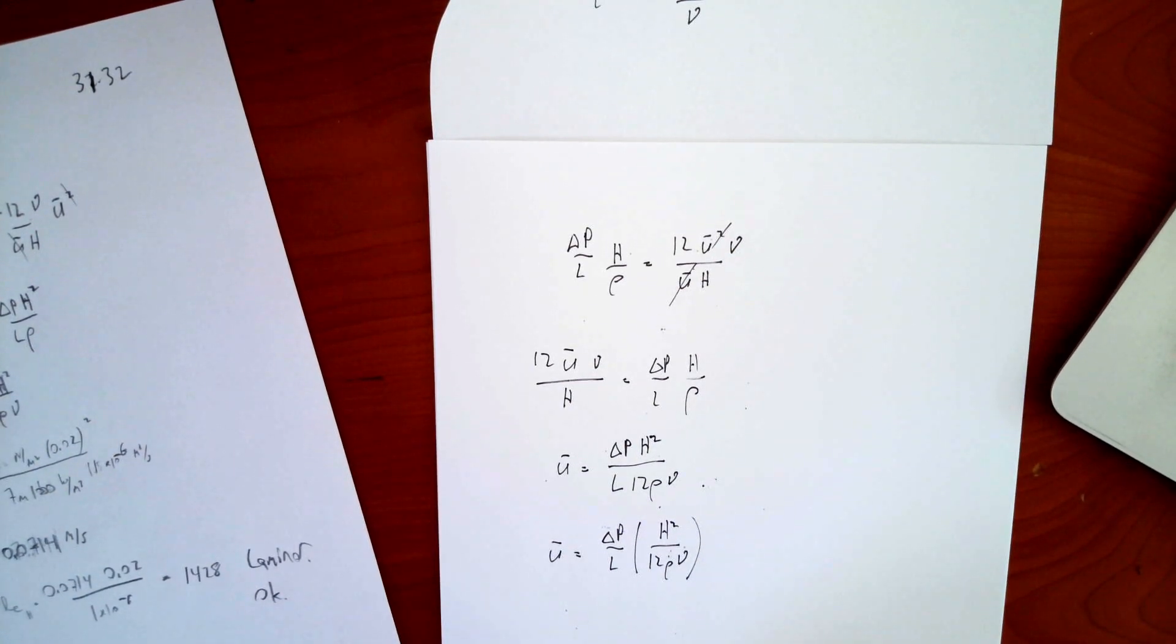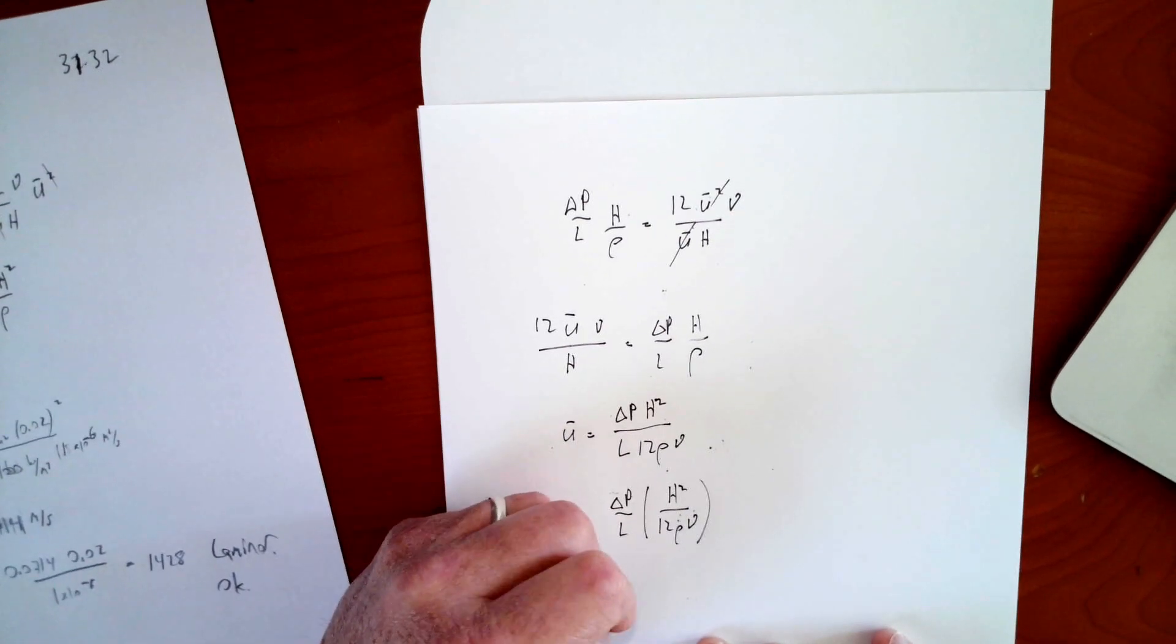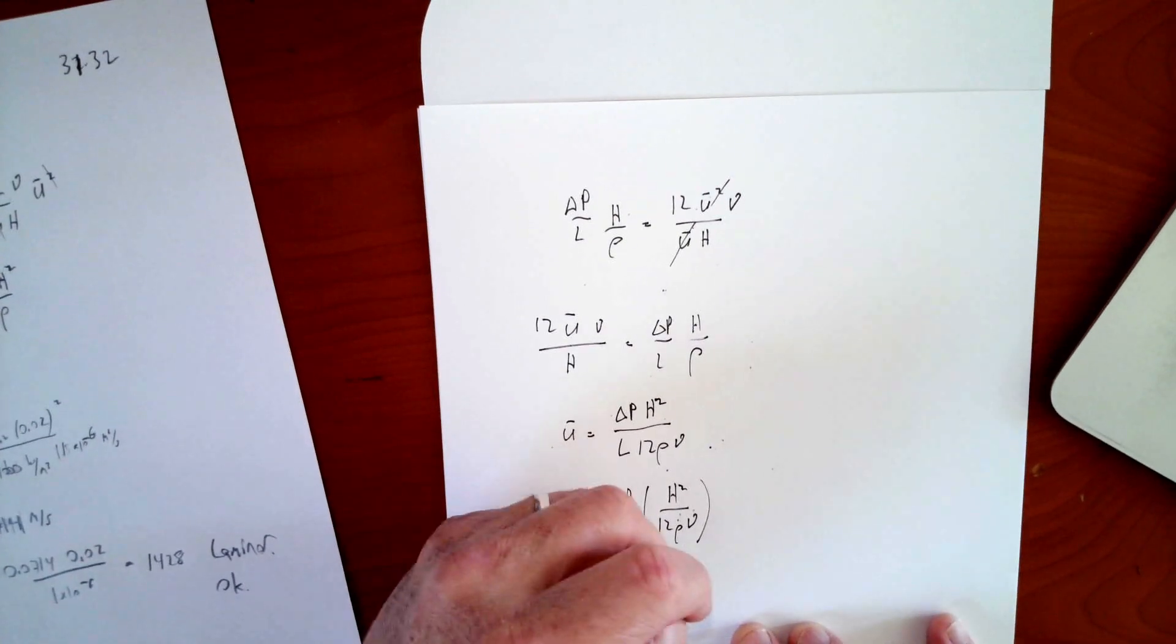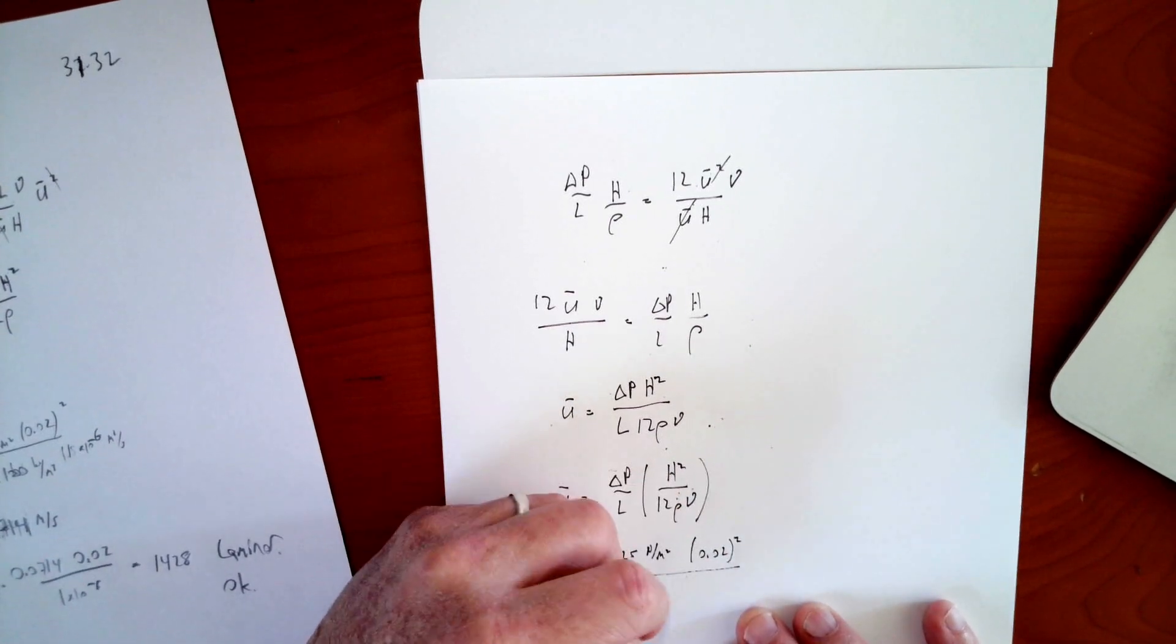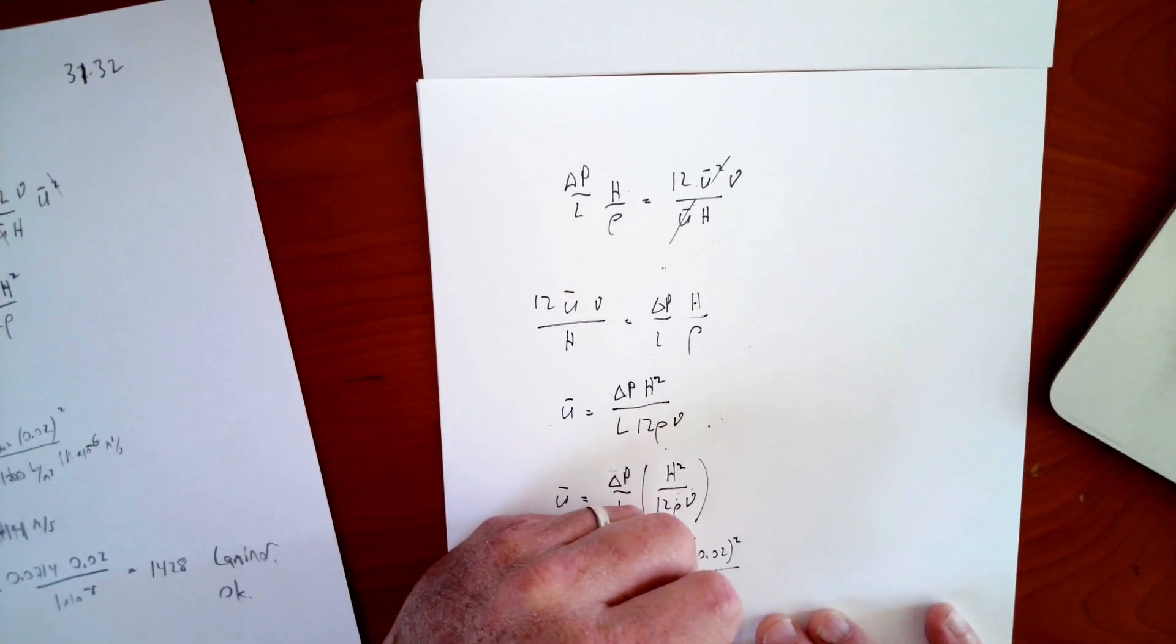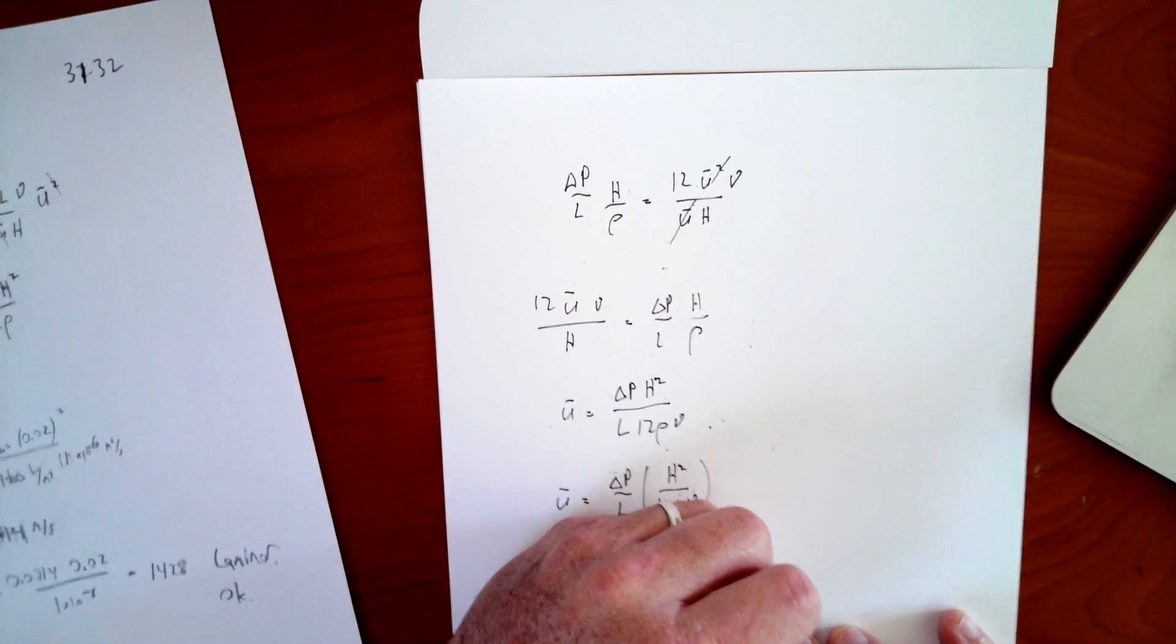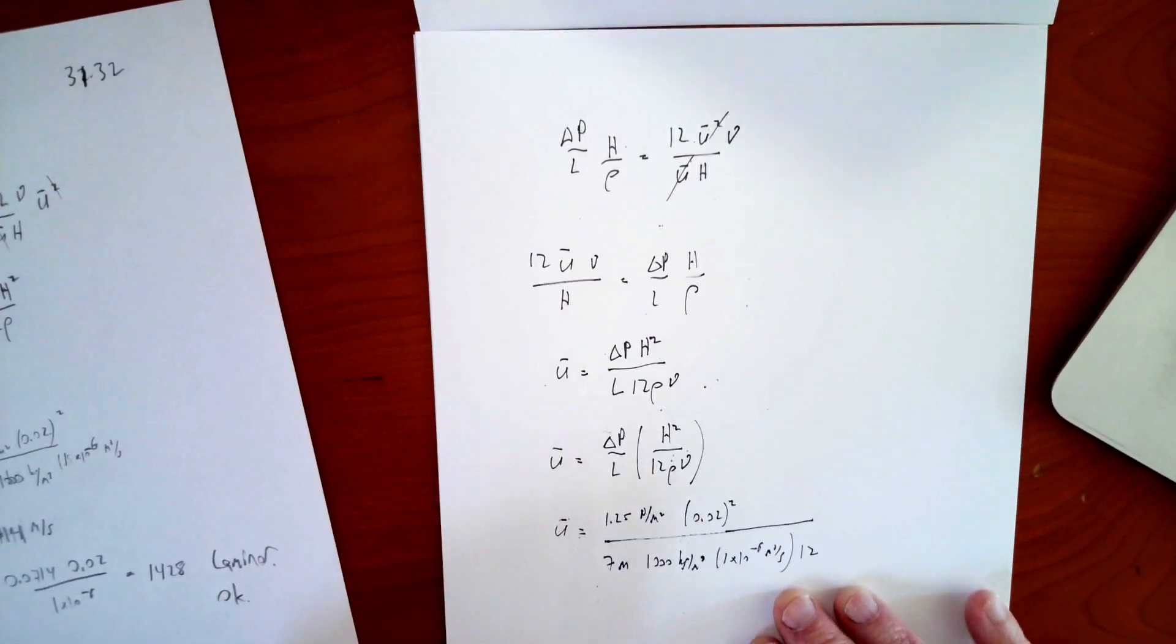So now I'm going to put in all the numbers for this. So I've got u bar is equal to delta p, which I said was 1.25 newtons per meter squared. I've got h squared, 0.02 squared. I've got 7 meters for l. I've got my density, I said it was water, so 1,000 kilograms per meter cubed. I've got the viscosity, which is 1 times 10 to the minus 6 meters squared per second for water. And I've got a 12.